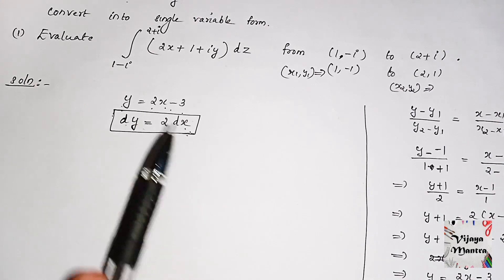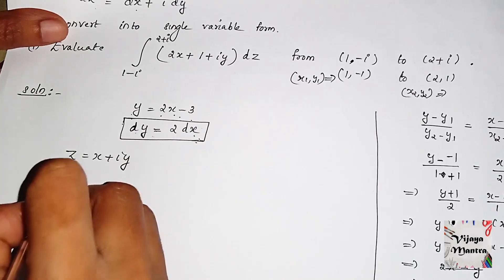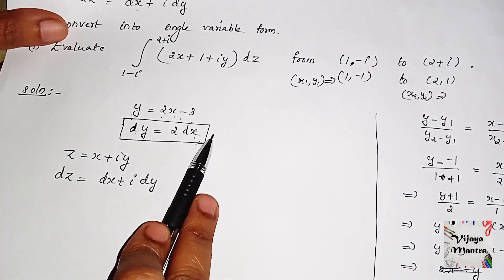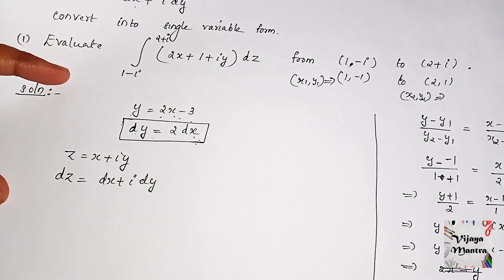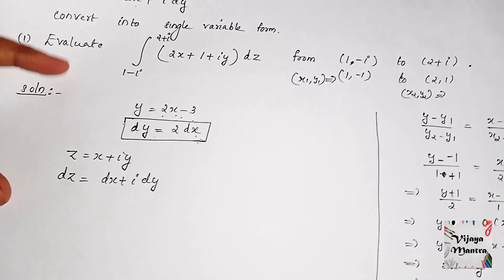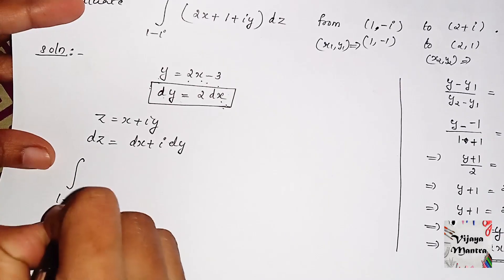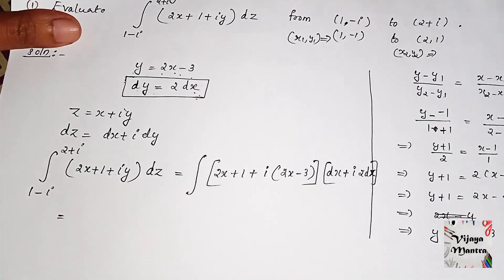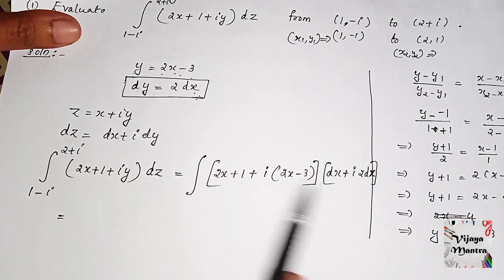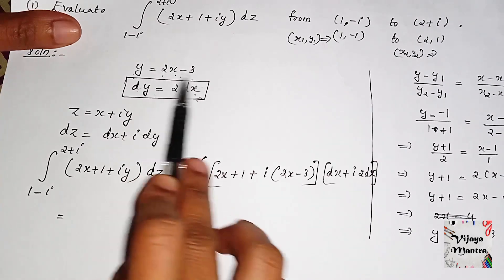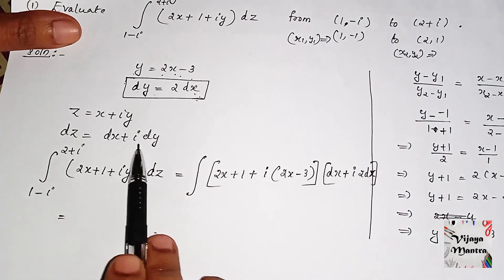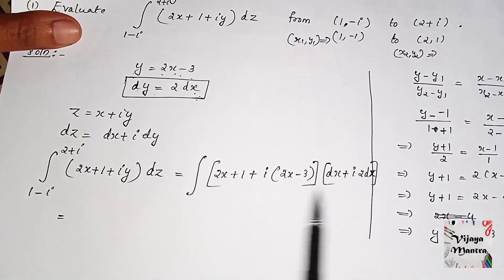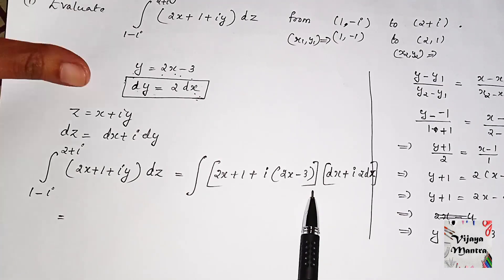With y equal to 2x minus 3, taking the derivative of both sides: dy equals 2 dx. The derivative of 3 is 0, so dy equals 2dx. We substitute dy with 2dx in the integral.